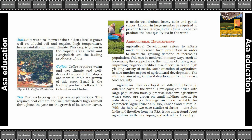Developing countries with large populations tend to practice intensive agriculture, where crops are grown on small holdings mostly for subsistence. Larger holdings are more suitable for commercial agriculture, as in USA, Canada, and Australia. With the help of two case studies of farms — one from India and one from the USA — we can understand agriculture in developing and developed countries.